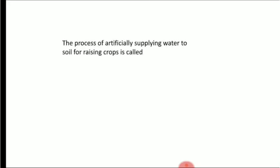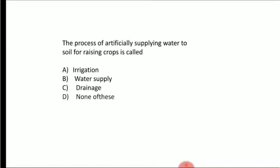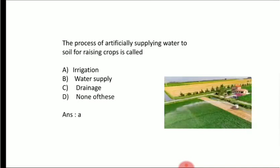The process of artificially supplying water to soil for raising crops is called — Option A: irrigation, Option B: water supply, Option C: drainage, Option D: none of these. The answer is Option A, irrigation — artificially supplying water to raise crops.